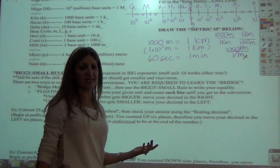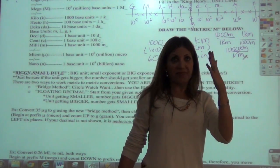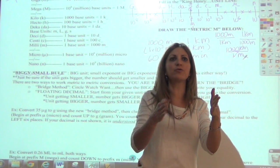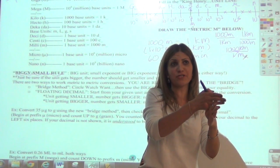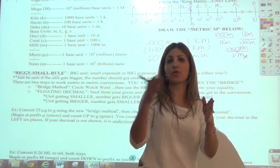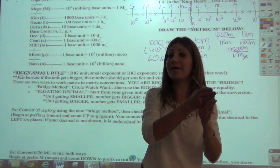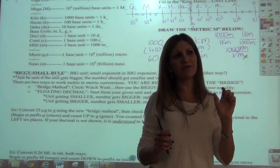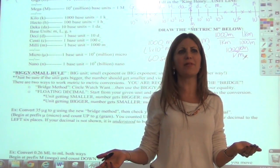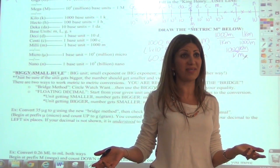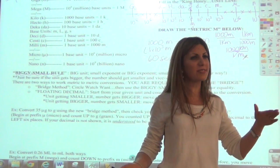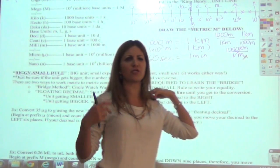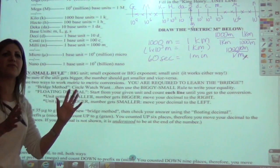You are required to learn the bridge method. I'm not teaching this to slow you down in chemistry — the metric system ties in through the bridge method, which you'll use throughout chemistry and other classes. We'll also talk about the floating decimal as a check. If your unit gets smaller, your number gets bigger — we'll discuss how to shift your decimal later.